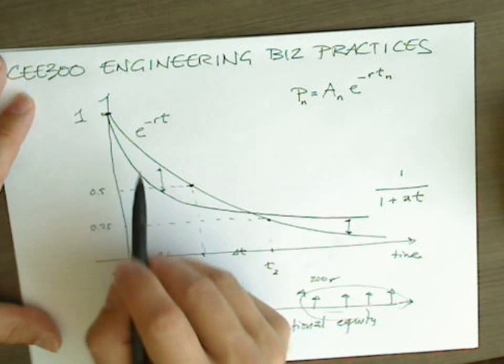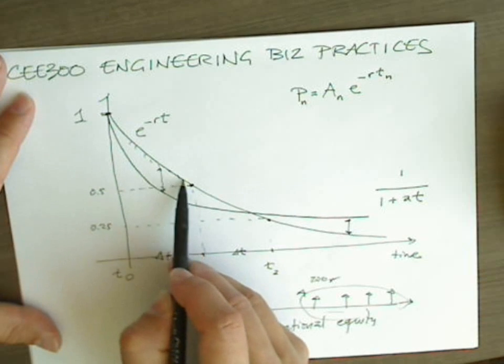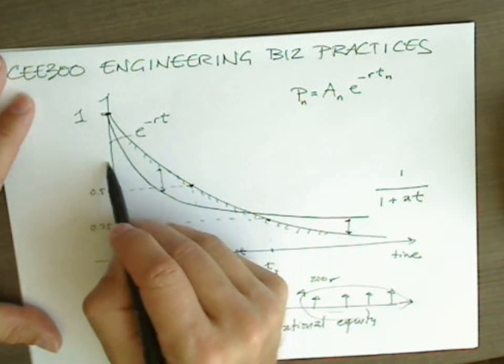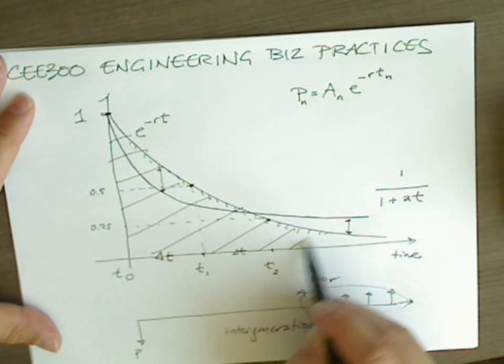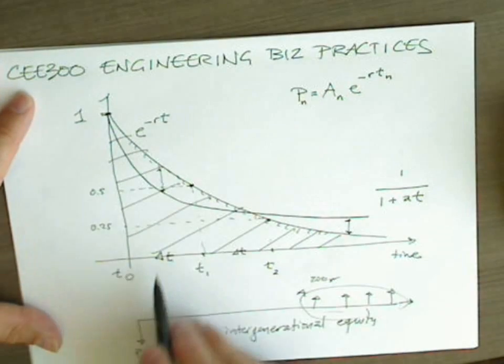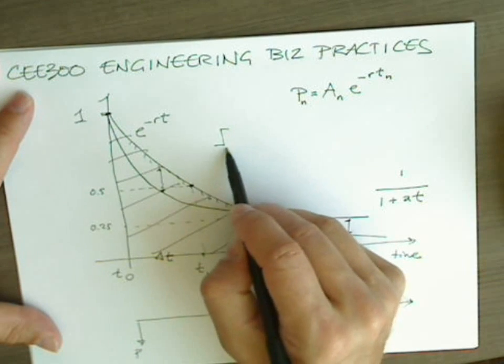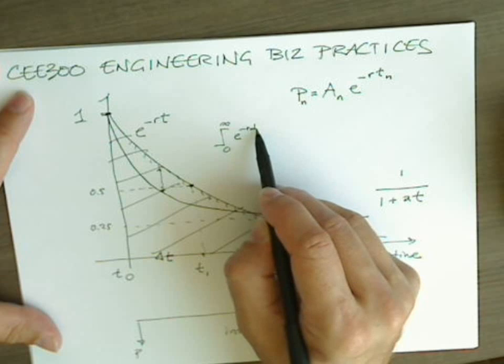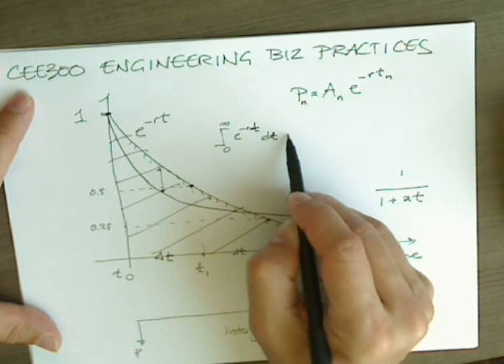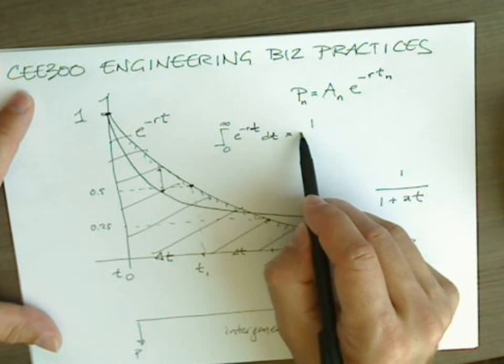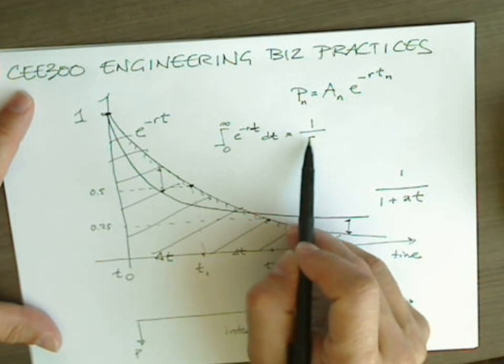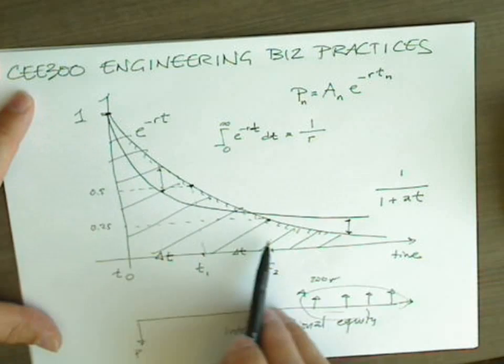If you recall two videos ago, we integrated the area under this exponential curve, and we found out that it was finite. The integral from zero to infinity of e to the negative RT, dt is one over r, which for any positive finite value of r, is going to be finite.